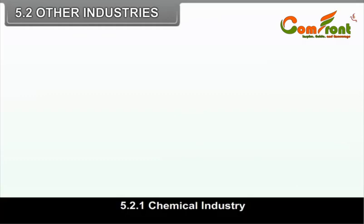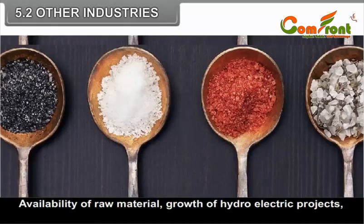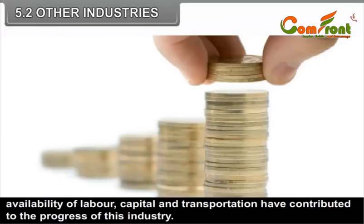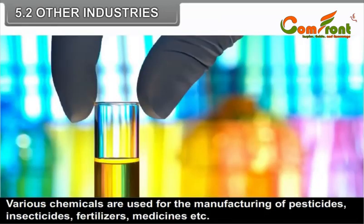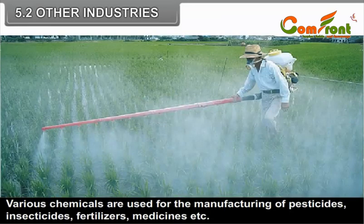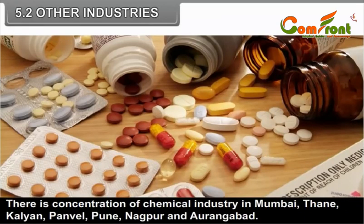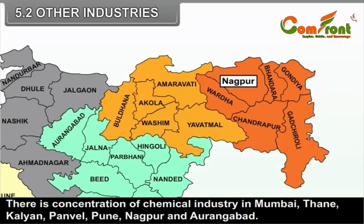5.2.1 Chemical Industry. This is one of the most important industries of Maharashtra. Maharashtra contributes 40% of the total production of chemicals in the country. Availability of raw material, growth of hydroelectric projects, availability of labor, capital and transportation have contributed to the progress of this industry. Various chemicals are used for the manufacturing of pesticides, insecticides, fertilizers, medicines, etc. There is a concentration of chemical industry in Mumbai, Thane, Kalyan, Panvel, Pune, Nagpur and Aurangabad.